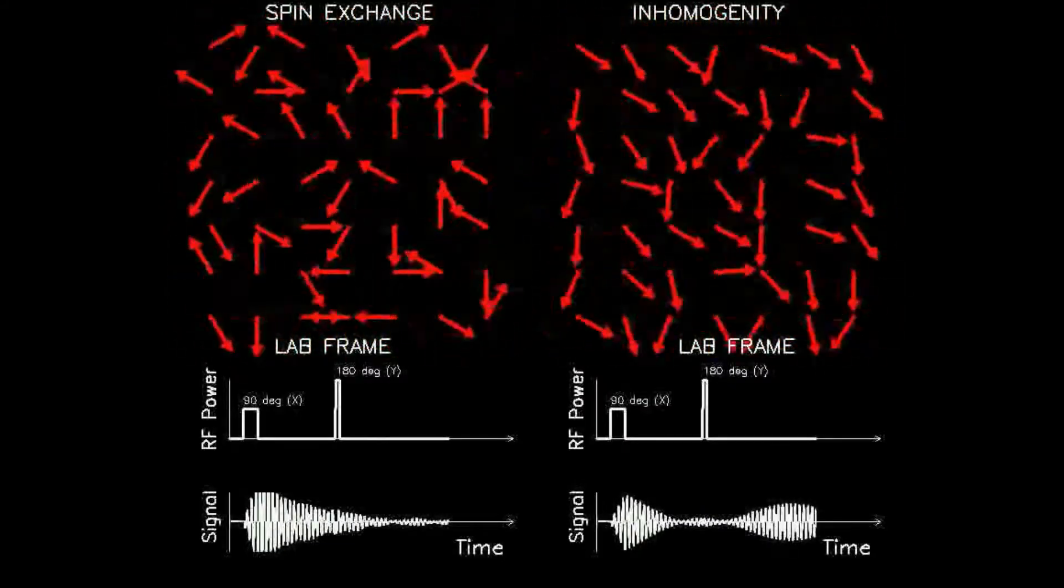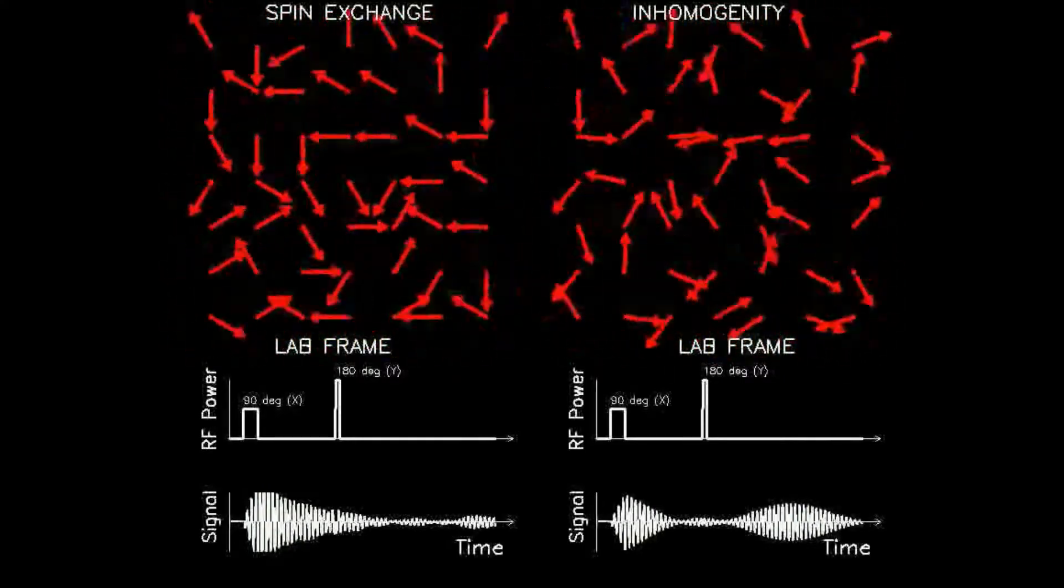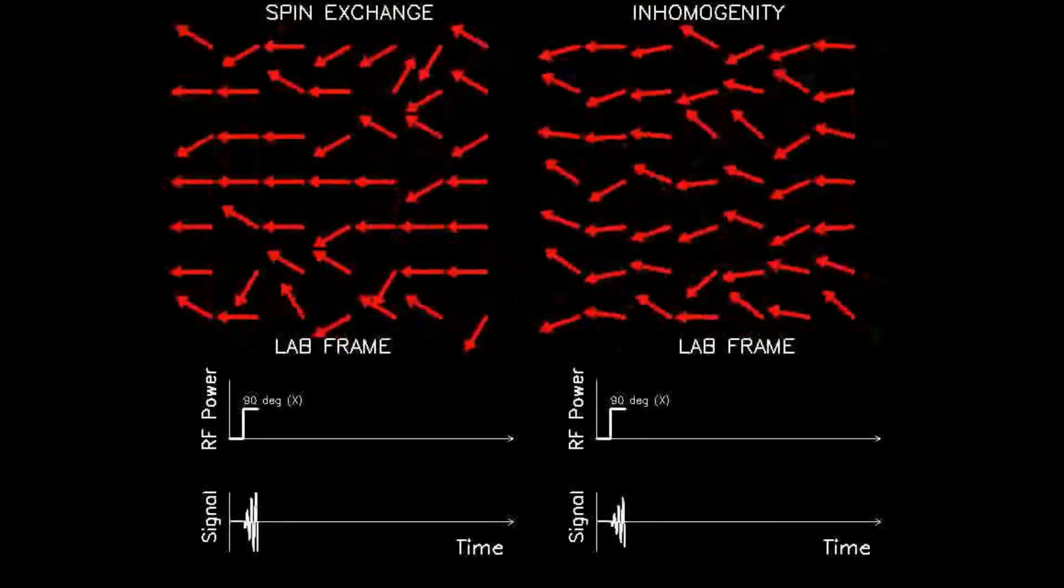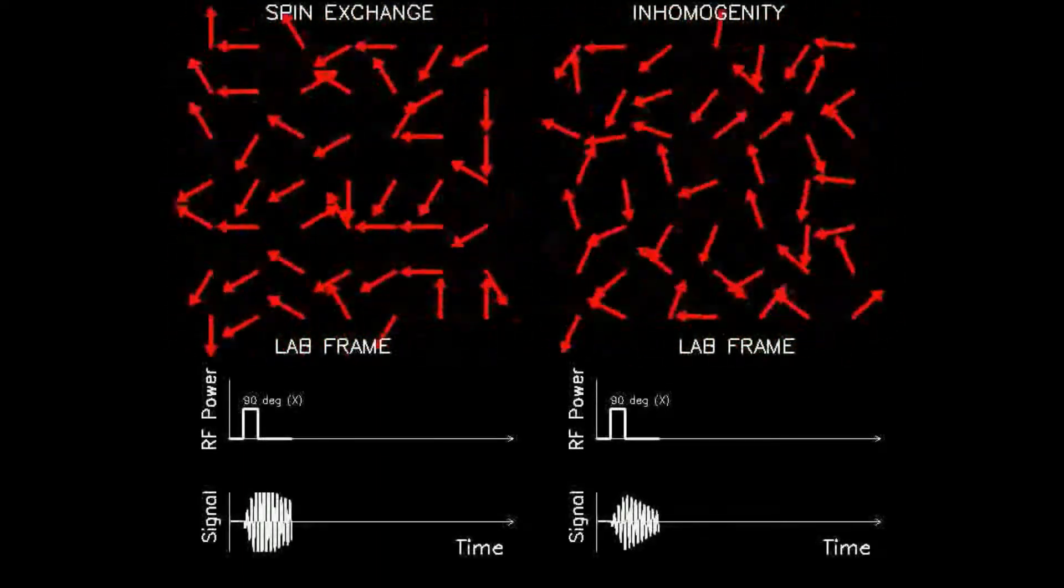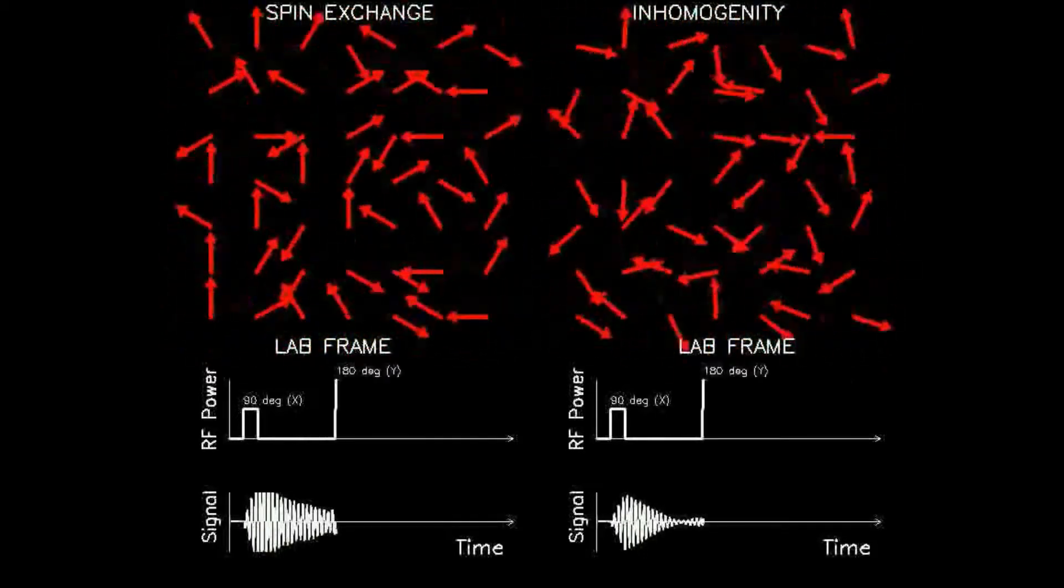The top timelines display the RF power, which is the same as before except for one addition. There is the previously seen 90 degree pulse, which initially flips the dipole around the x-axis into the xy plane, but it is now followed by a 180 degree pulse around the y-axis.